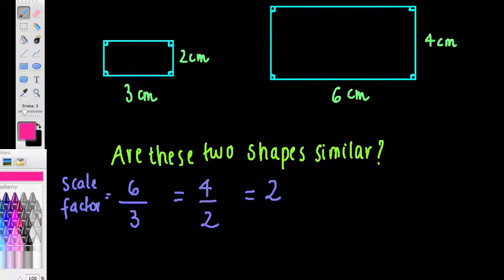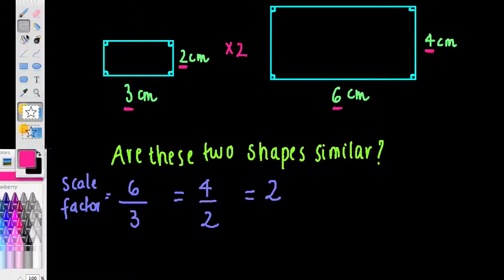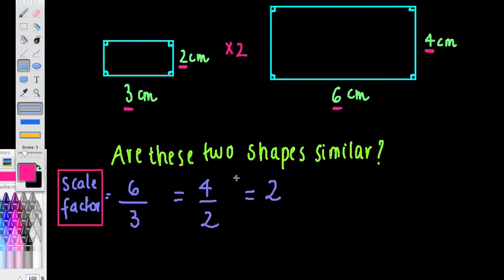One thing that you can do also is notice that this side here, to get to that side there, to enlarge it from 2 to 4, I would multiply by 2, wouldn't I? Times by 2. And that's also what's happened here. To get from this side to compare to that one over there, I'm multiplying by 2, as 3 times 2 is 6. If I were asked what is the scale factor of that shape, the scale factor is 2.